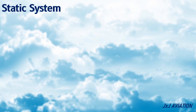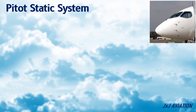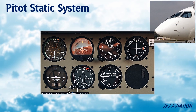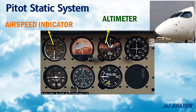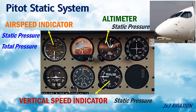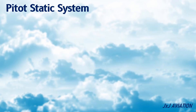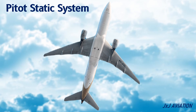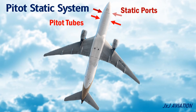The pitot-static system. The pressures taken from the pitot tube and static port are used in different flight instruments such as the airspeed indicator, altimeter, and the vertical speed indicator. The airspeed indicator uses both static pressure and the total pressure values to indicate the airspeed. The altimeter and the vertical speed indicator use the static pressure values for their readings. In modern aircraft, the pitot tubes and static ports are installed on both sides of the fuselage to reduce errors and to prevent incorrect readings.